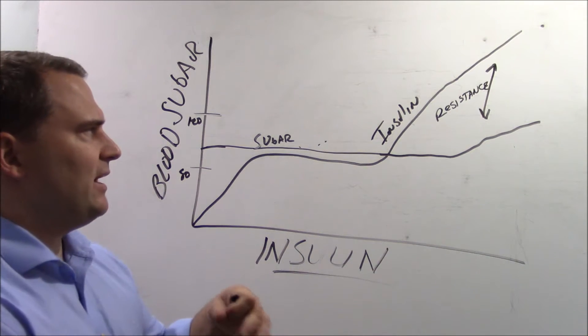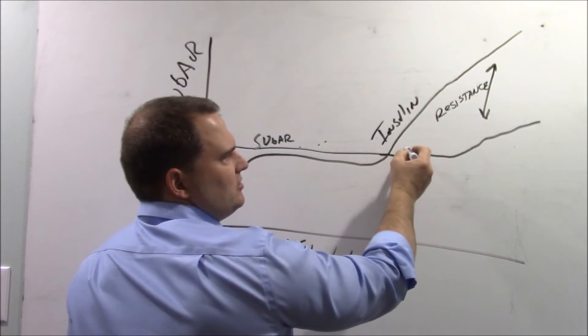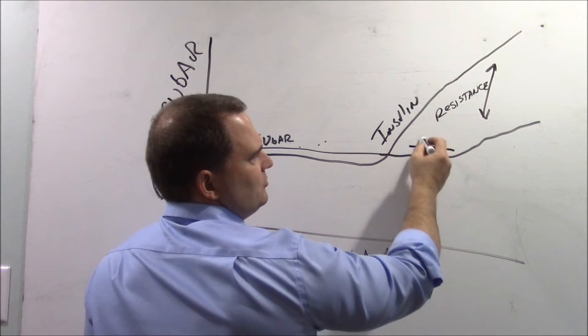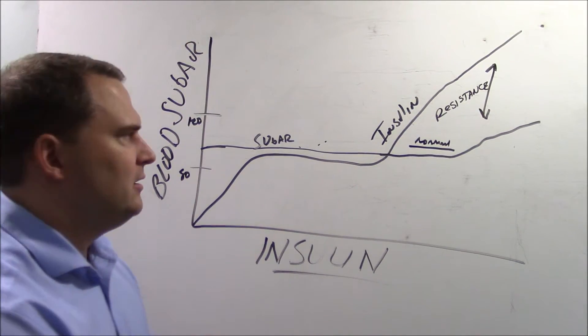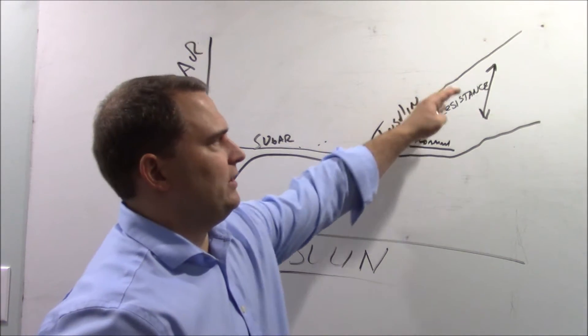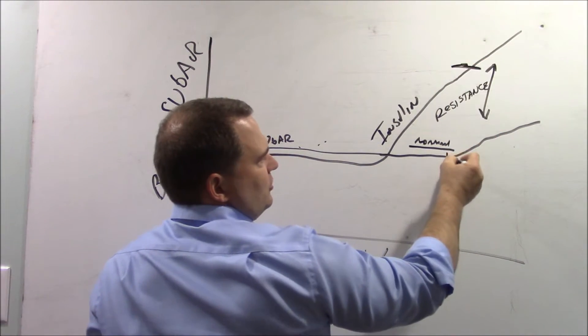Now the reason I would ask for that is insulin levels may be going up dramatically and still keeping you in this normal range. But this is a problem. This is a disease state because you're developing what's called insulin resistance. So insulin levels are way up here and sugar is still here.